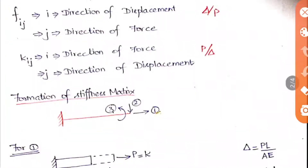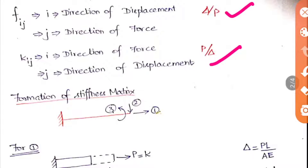Matrix elements are denoted as FIJ or KIJ. For FIJ, since F equals deflection/load, the first index I denotes the direction of the displacement and the second index J denotes the direction of the force. For KIJ, since K equals load/deflection, the first term I denotes the direction of the load and the second term J denotes the direction of the displacement. This distinction is very important when applying conditions while solving problems.